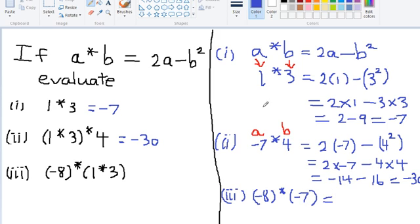Once again, the first number is a and the second number is b. So we are substituting for a and b. So we will have 2 times negative 8, which is a, subtract negative 7 squared in brackets.